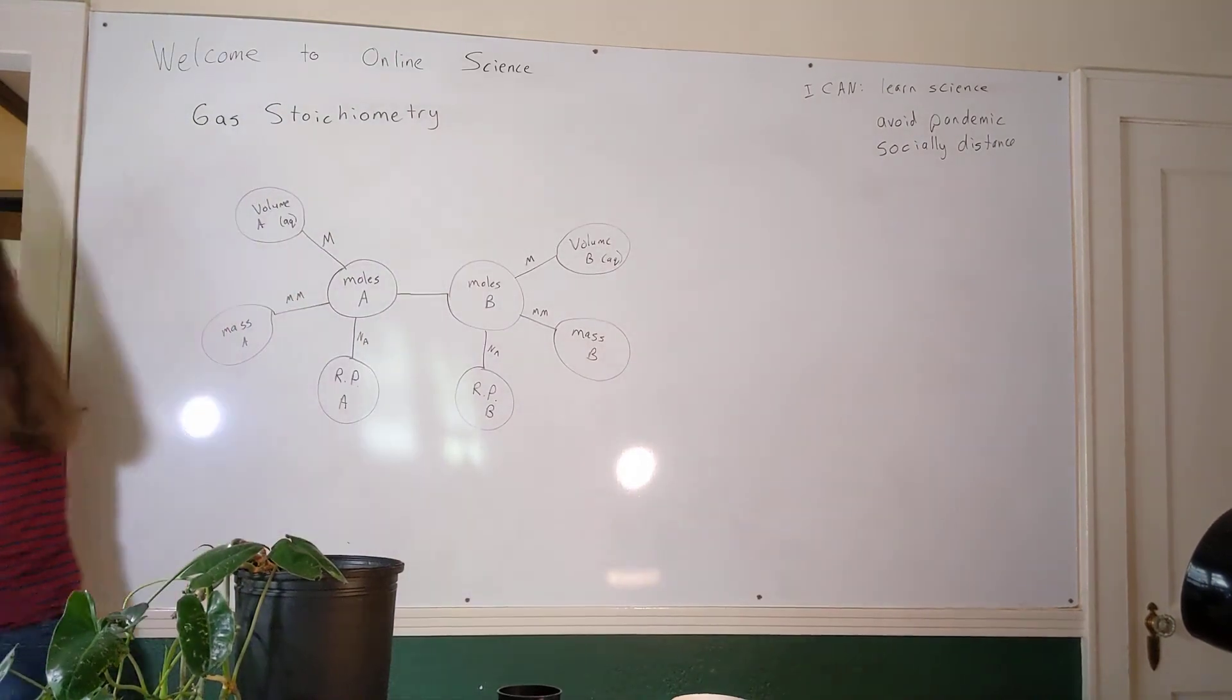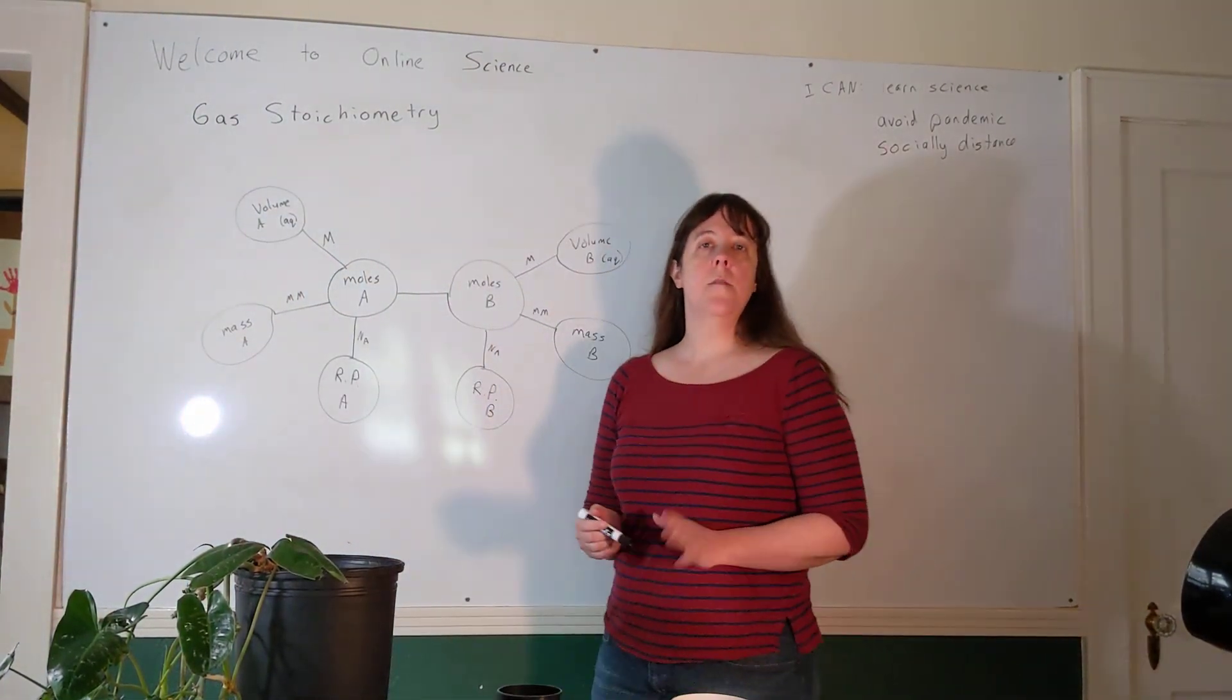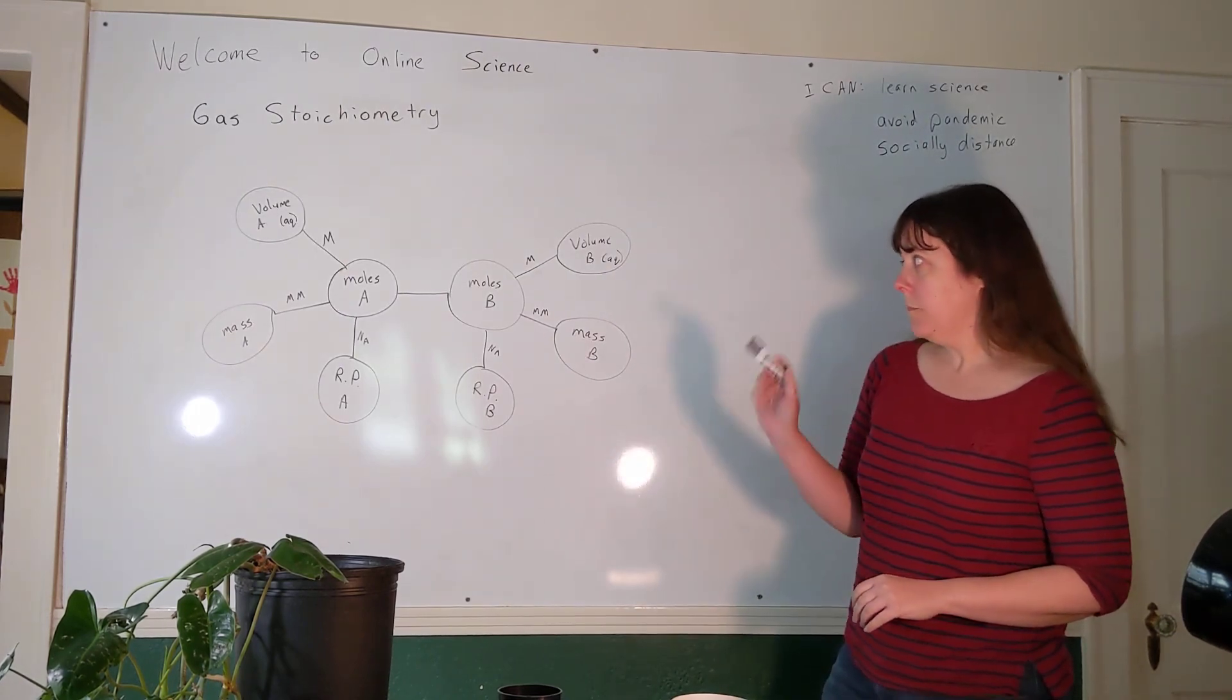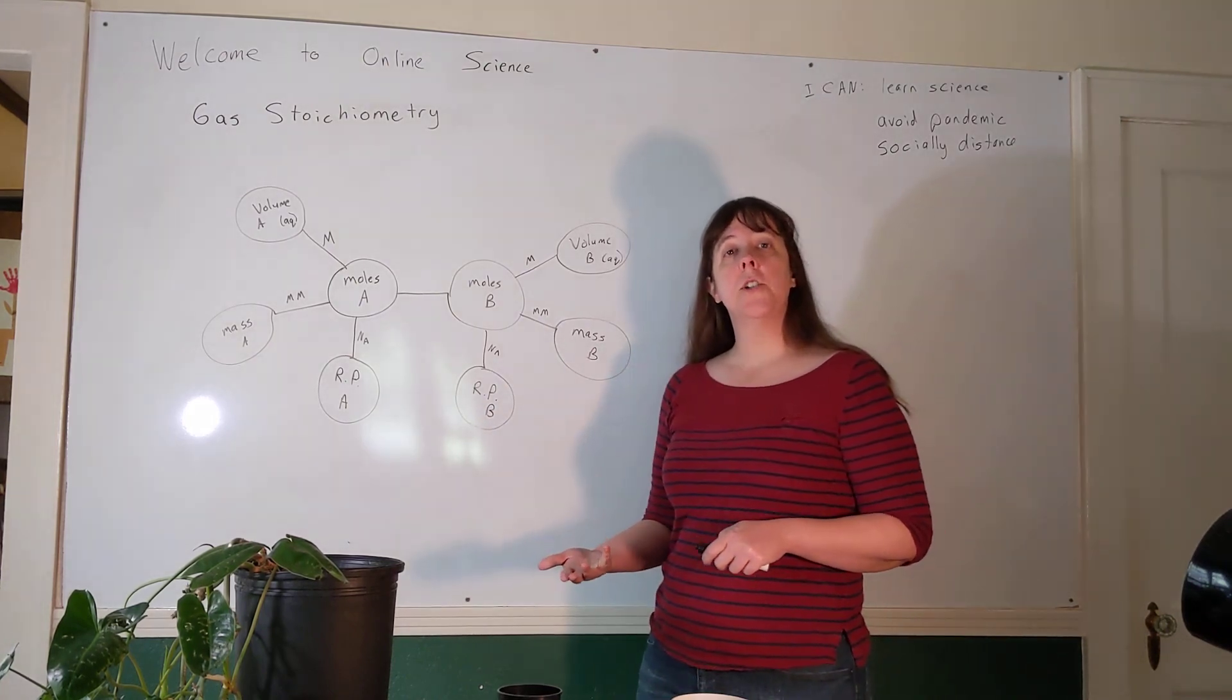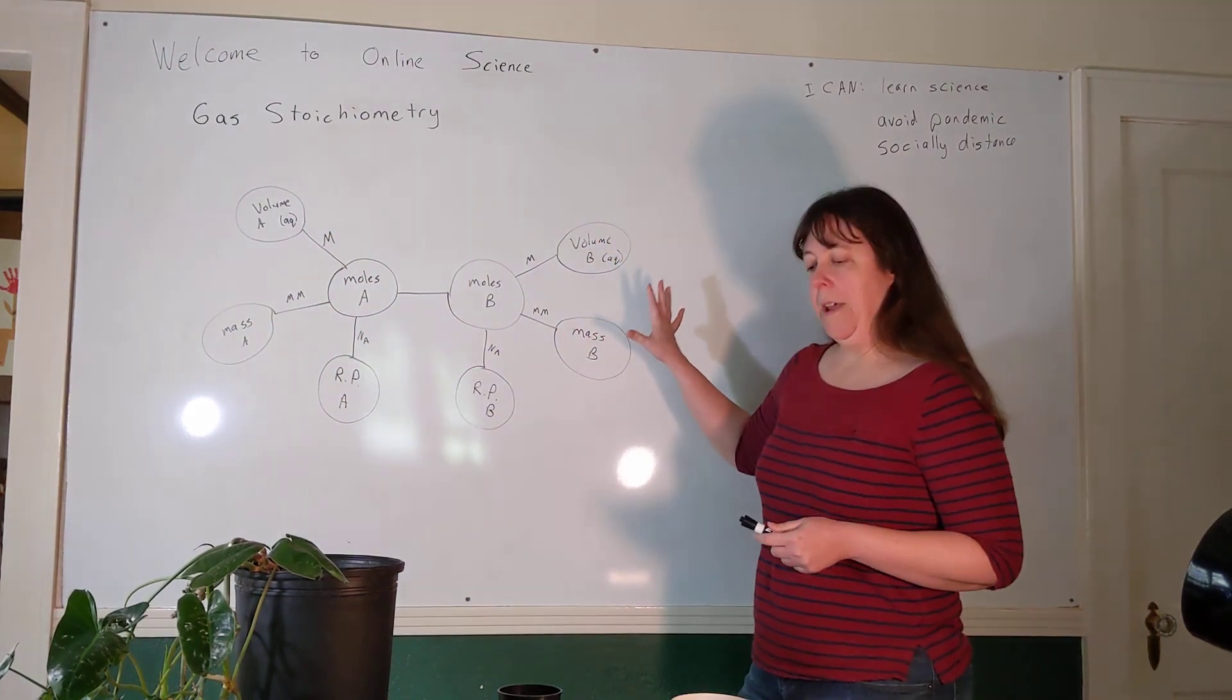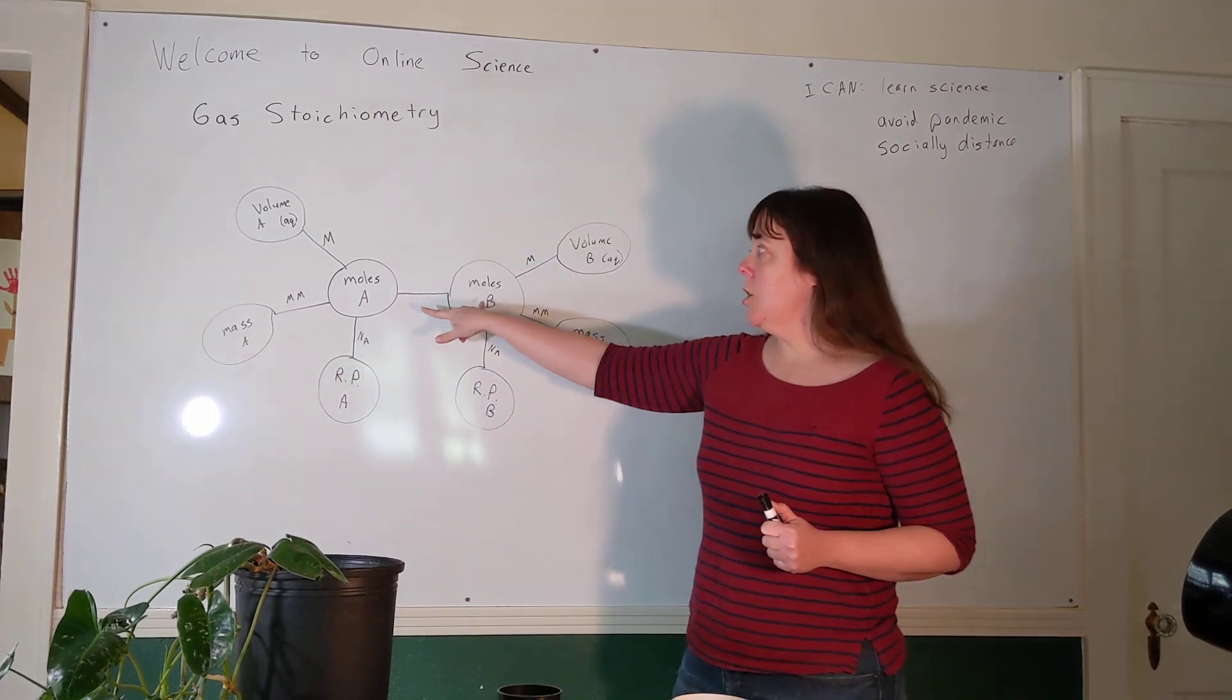We've solved lots of stoichiometry problems so far this year. It's one of those things that just keeps recurring over and over again in chemistry. When I talk about stoichiometry, I like to think about these islands of stoichiometry. The basic idea is that on the left side we have all the ways we can represent a quantity of substance A, and on the right side we have all the ways we can represent a quantity of substance B. The only way we can connect between substance A and substance B, the only bridge between these two items, is the mole ratio.